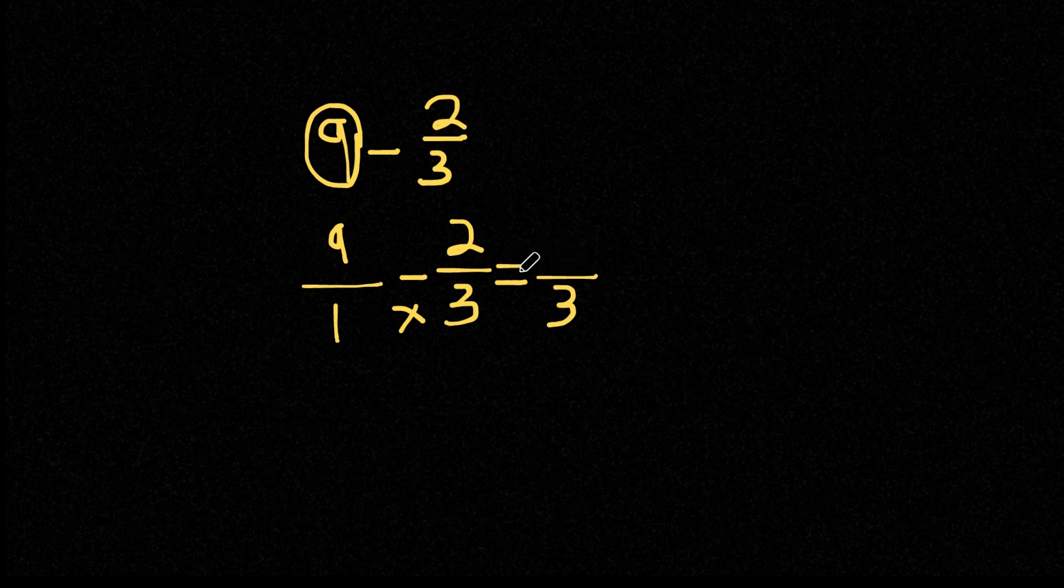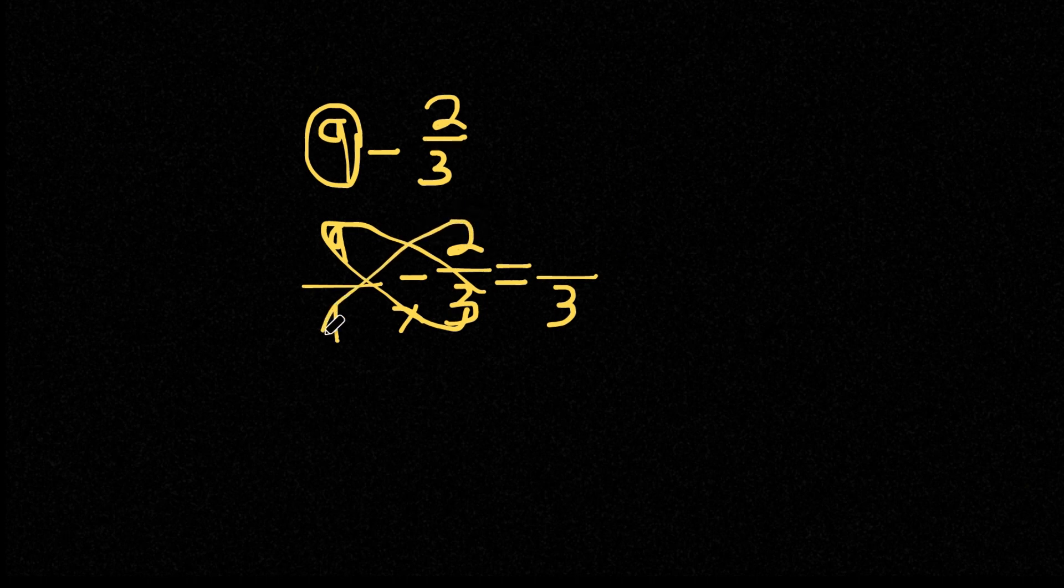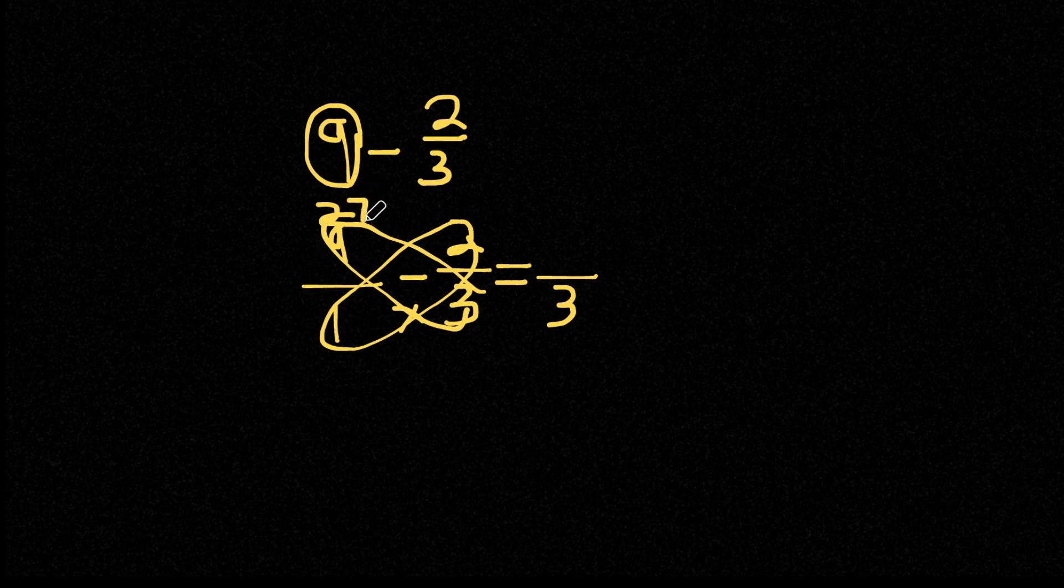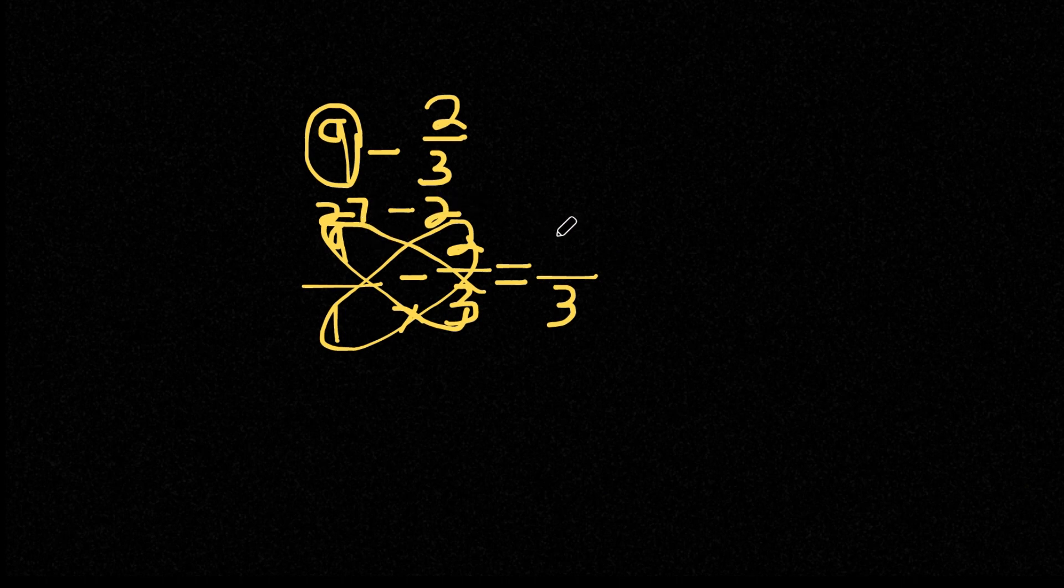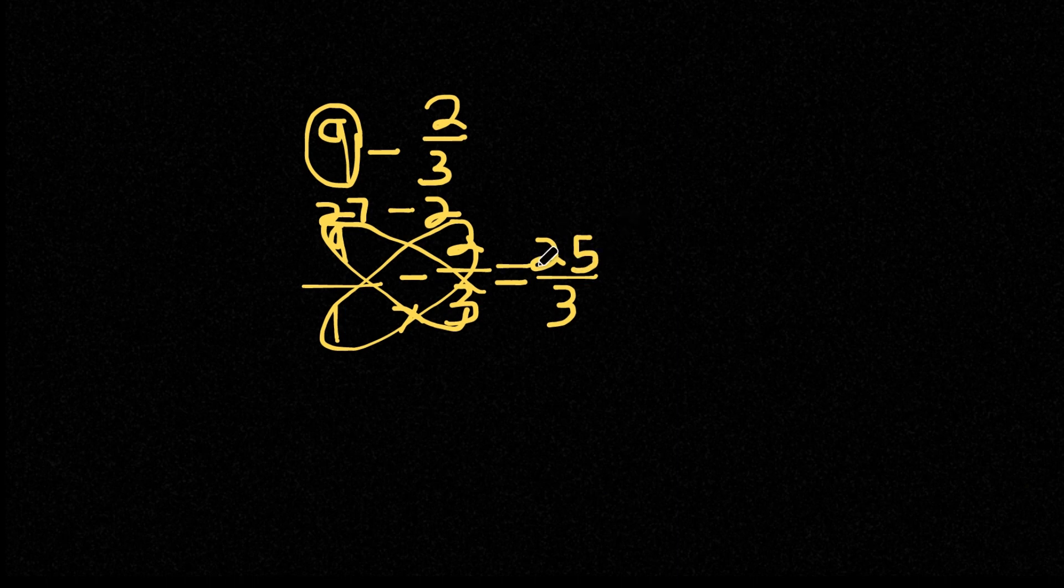Now to find our numerator, we're going to do cross multiplication. So we're going to multiply 9 and 3 as well as 2 and 1. 9 times 3 is 27, and we're going to subtract this with 1 times 2, which is simply 2. And 27 minus 2, that's 25. So 25 over 3 is our answer.